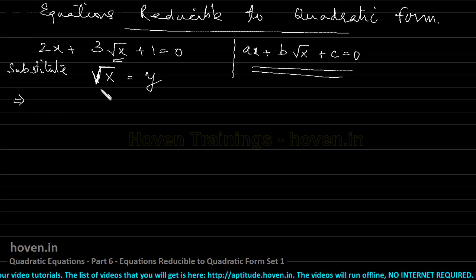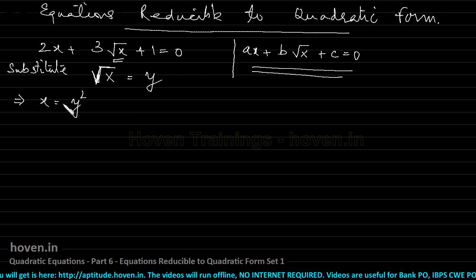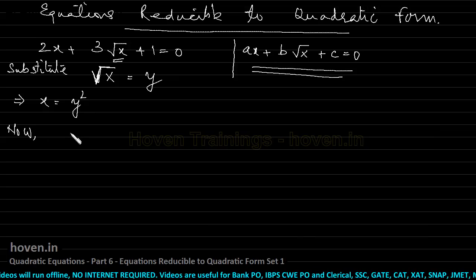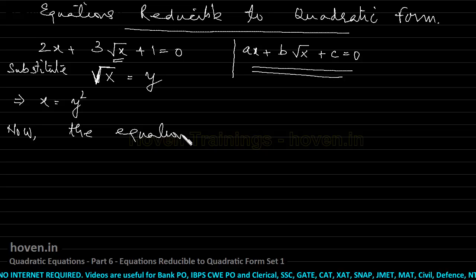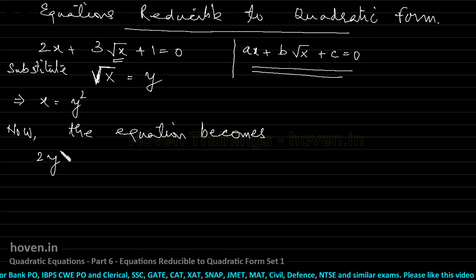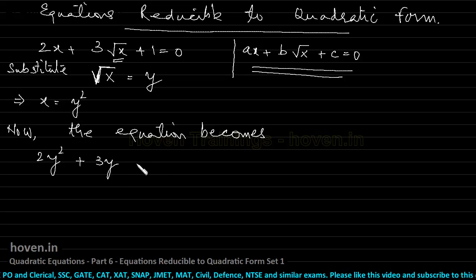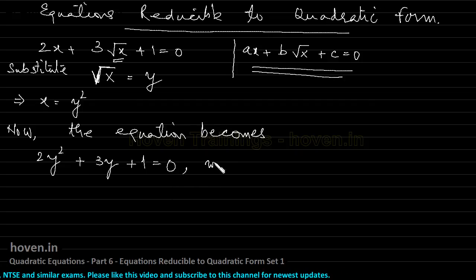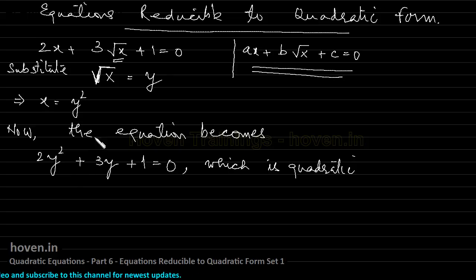Squaring both sides gives x = y². So now I have: x is y², and √x is y. I can therefore write my equation. The equation becomes: substituting x with y² and √x with y, it becomes 2y² + 3y + 1 = 0, which is quadratic. I have been successful in converting this difficult-looking equation into a familiar quadratic form.